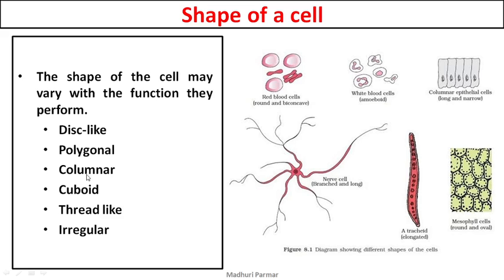Then you have columnar cells — their length is bigger than the breadth or width. Such columnar epithelial cells you might have studied, and we will cover them when we study animal tissues. Then you have cuboidal cells — cube-like with length, breadth, and width all almost equal in size. Then thread-like — some neurons have thin axons, or in plant cells you can use a tracheid as an example. Tracheid is a part of xylem, which does water transport.